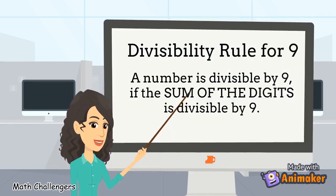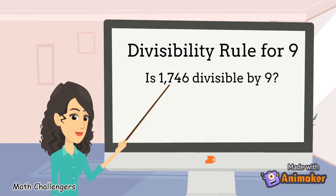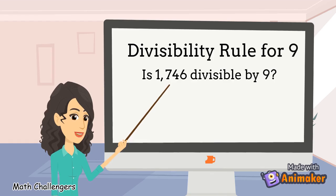A number is divisible by 9 if the sum of the digits is divisible by 9. Is 1,746 divisible by 9? Get the sum of the digits: 1 plus 7 plus 4 plus 6 equals 18. 18 is divisible by 9, hence 1,746 is divisible by 9.